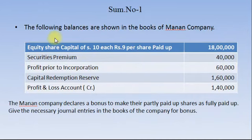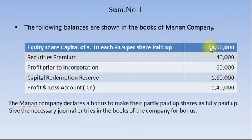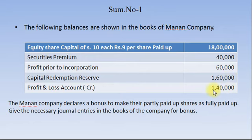Here is the question. The following balances are shown in the books of Manan Company: Equity Share Capital of Rs. 10 each, Rs. 9 per share paid up, Rs. 18,00,000. Securities Premium Rs. 40,000. Profit Prior to Incorporation Rs. 60,000. Capital Redemption Reserve Rs. 1,60,000. And Profit and Loss Account credit balance Rs. 1,40,000.